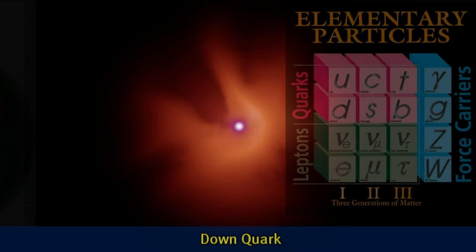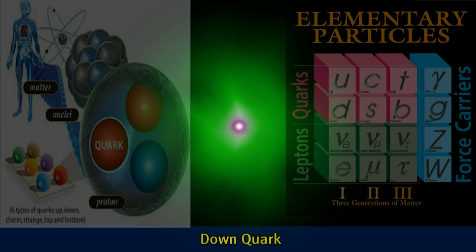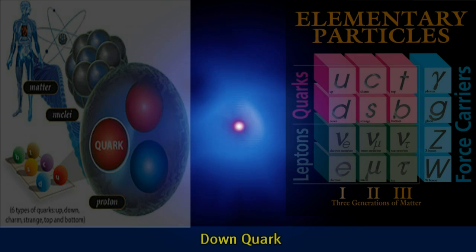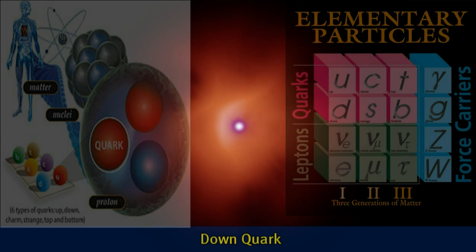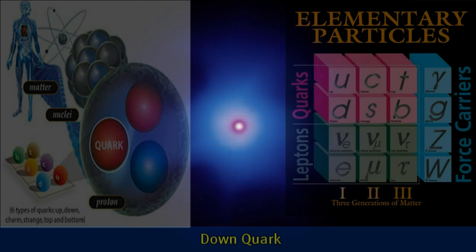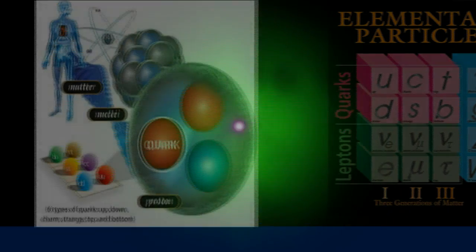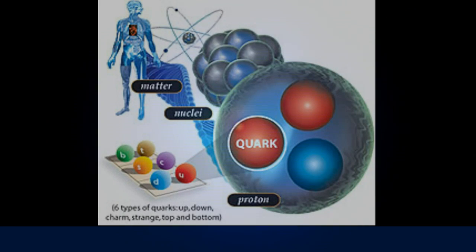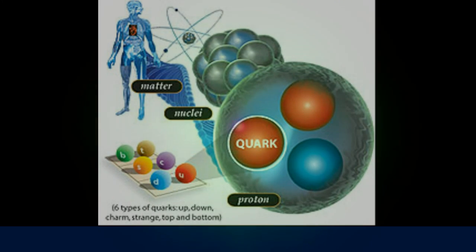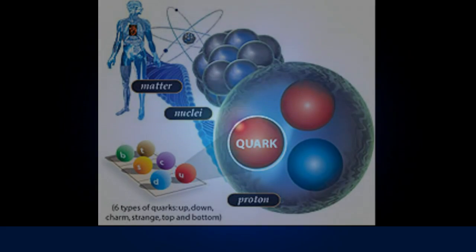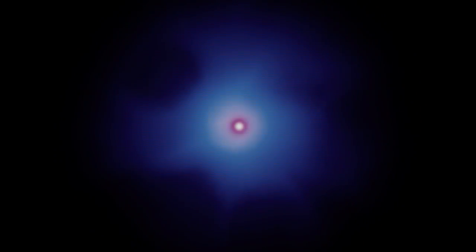The larger volume of shifting red, green, and blue is meant to represent the color charge, which generates the strong nuclear force. This is the force that holds quarks together in a proton or neutron, and the residuum of this force holds the protons and neutrons together in the nucleus of atoms. This force is a hundred times stronger than the electromagnetic force, but its range is limited to about the size of a proton.